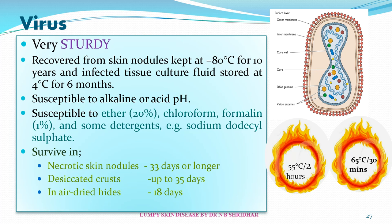The virus is very sturdy — it can be recovered from skin nodules kept at minus 80 degrees Celsius for 10 years, and infected tissue culture fluid stored at 4 degrees Celsius for 6 months. It is susceptible to ether 20%, chloroform, formalin 1%, and detergents like sodium dodecyl sulfate. The virus survives in necrotic skin nodules for 33 days or longer, in desiccated crusts up to 35 days, in air-dried hides about 18 days, and can survive at 50 degrees Celsius for 2 hours or 65 degrees Celsius for 30 minutes — making it one of the sturdiest viruses.